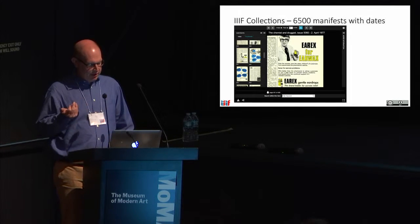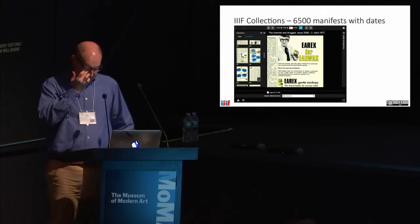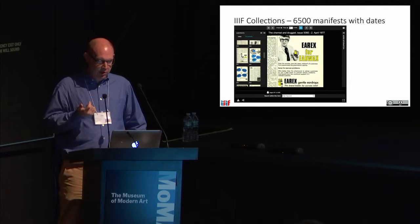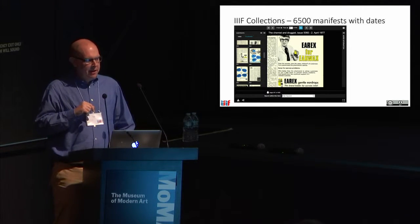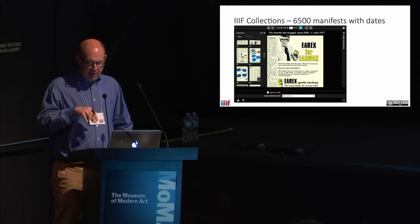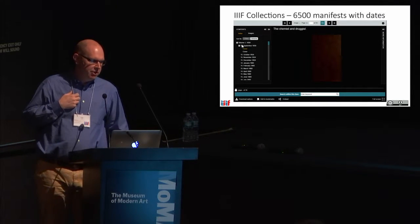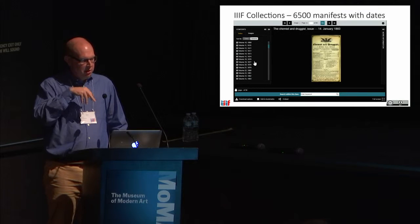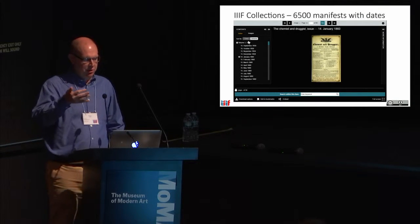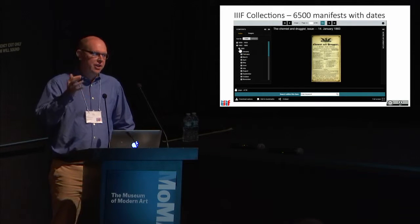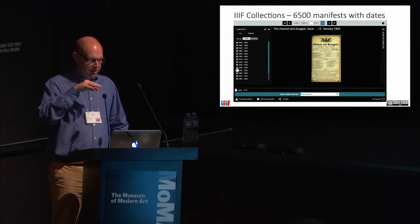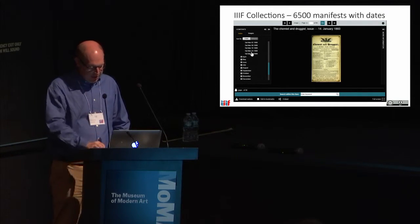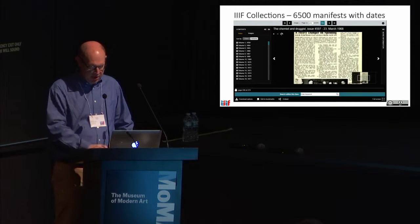We can take that to extremes. The Wellcome Library has a thing called Chemist and Druggist, which is essentially a 6,500-volume book if you're trying to model it as a manifest, and it's decorated with date metadata. You can navigate around the structure of the work across all these different volumes. I can flip to a date-based navigation regardless of the published structure of the collection, because there is date metadata in the manifest — and I could use that date metadata to generate timelines and things like that.